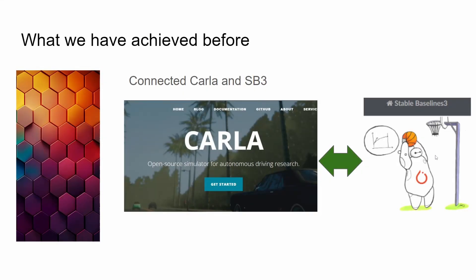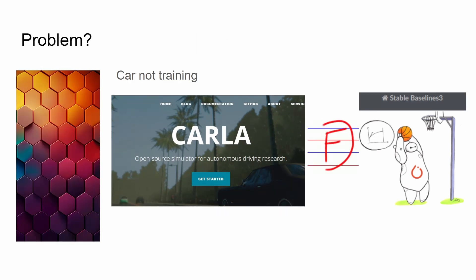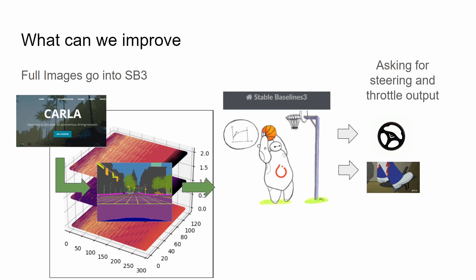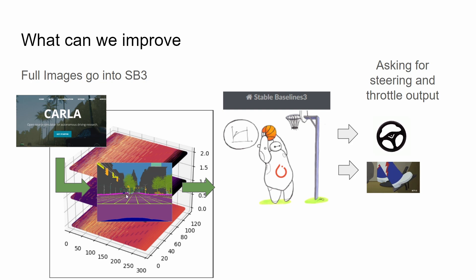Previously we connected the reinforcement learning framework — represented by Stable Baselines 3, let's call it RL — and CARLA, which is our driving simulator. We connected them before, but the models were not being trained, or the car didn't know what to do next or how to improve; it kept crashing. I'm sure many of you have tried this after my tutorial on getting them working together. So let's recap the overall architecture. We've got the simulator running here, sending images from the front-facing camera, and I'm using semantic segmentation.